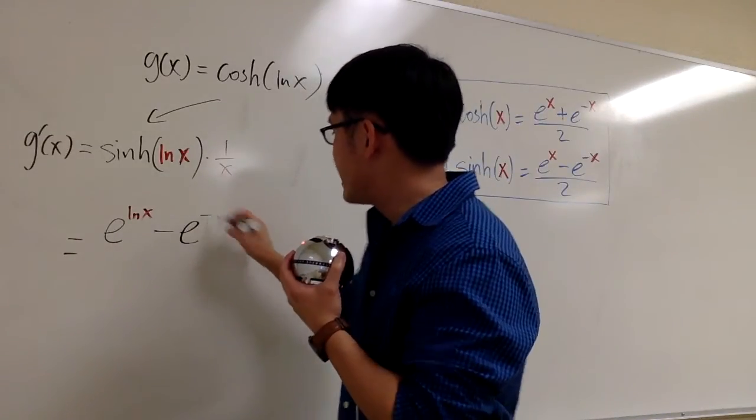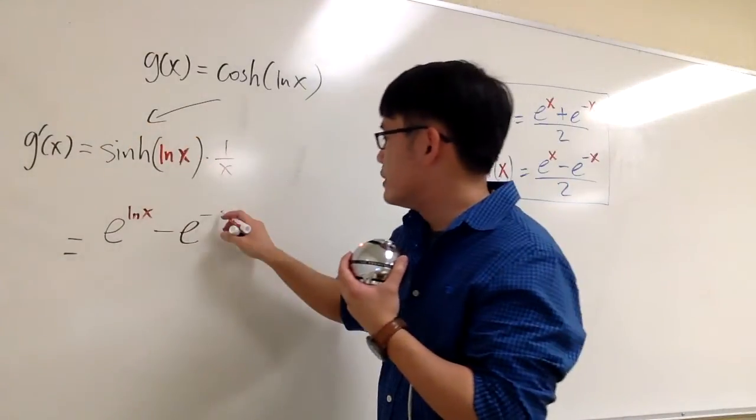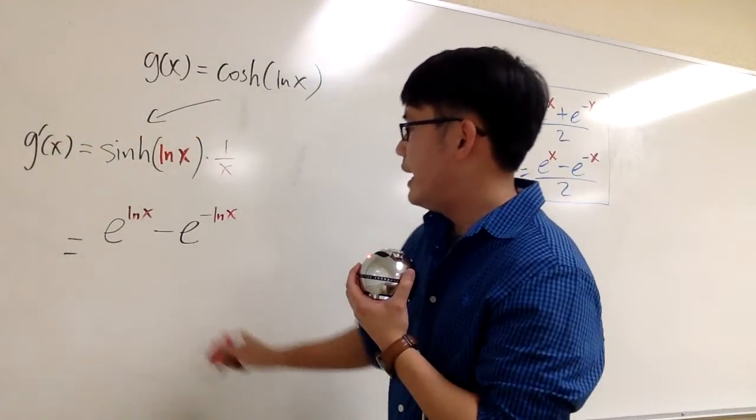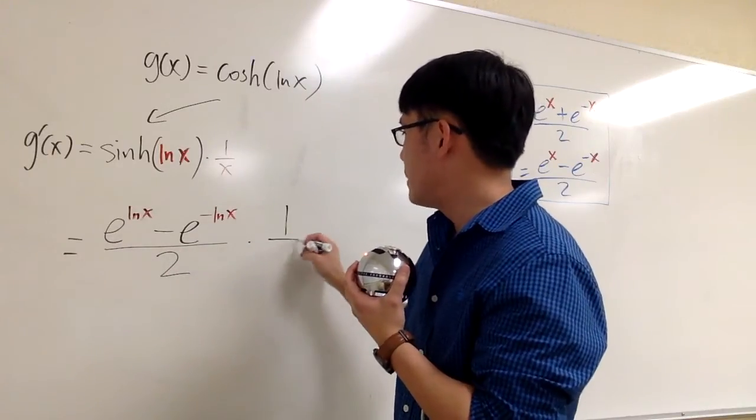We'll continue. Minus e to the negative. Negative, that's the second part. And the input is ln x. And we have that all over 2. And we still have this multiplied by 1 over x.